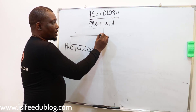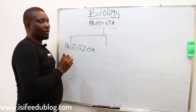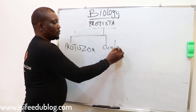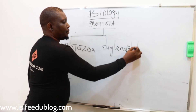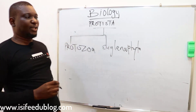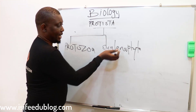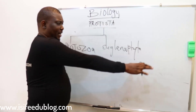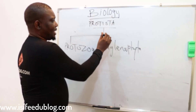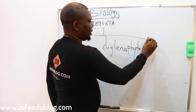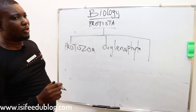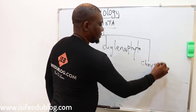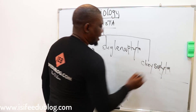The second group under the Protists is phylum Euglenophyta — what you know as Euglena. I will tell you why Euglena, phylum Euglenophyta, is on its own separate phylum, different from other protozoa.